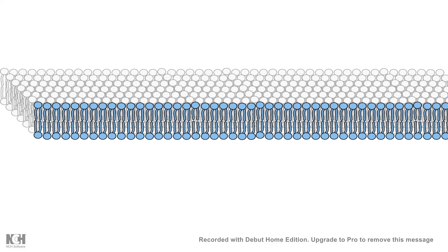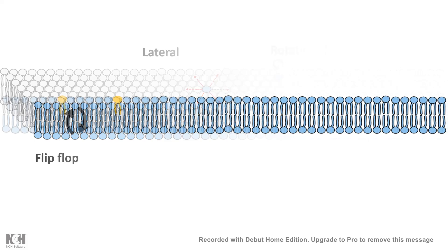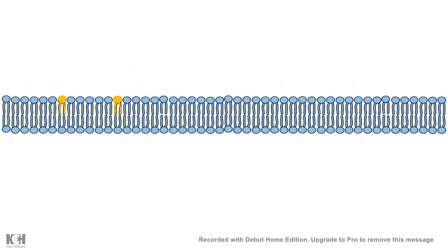If we think about a patch of the membrane, one particular phospholipid can show lateral movement — it can diffuse in any direction, though the rate is very slow. It can also show rotational movement along its own axis, and it can also show flip-flop movement from one face of the bilayer to the other.